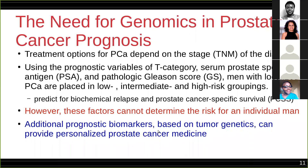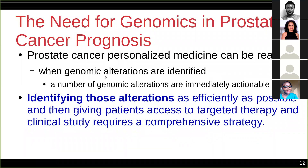Prostate cancer personalized medicine can be realized when genomic alterations in prostate cancer are studied and identified. A number of genomic alterations are immediately actionable — the FDA already has a list of drugs that can be used to target those alterations. Identifying those alterations as efficiently as possible and then giving patients access to targeted therapy and clinical studies requires a comprehensive strategy. The genomics of prostate cancer, according to a recent paper by Rubin and Demichelis in 2018, has been quite difficult to study compared with other cancer types, despite efforts starting as early as the 1980s.